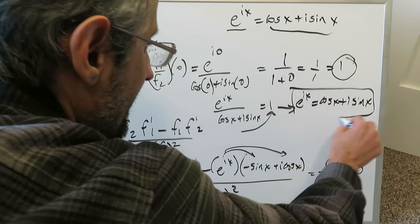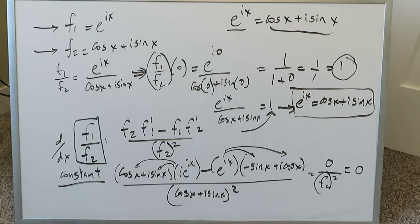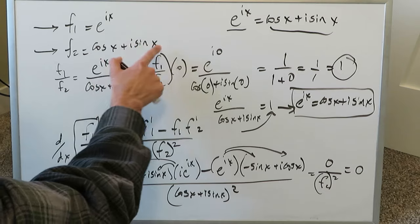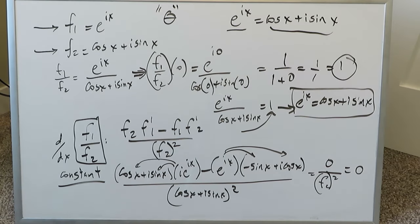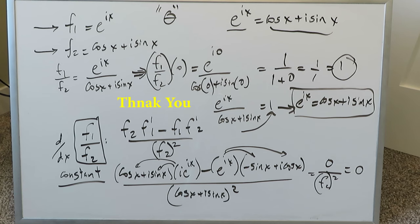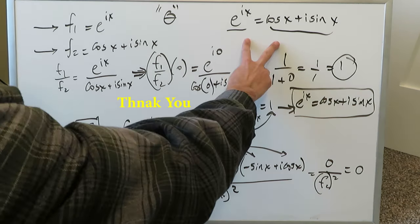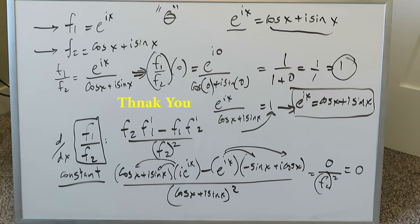Cross-multiplying, we end up with e to the ix is equal to cosine x plus i sine x — and here it is: Euler's formula has been derived. Remember, x could have easily been replaced with theta and the formula would be the same. All of this has been derived using calculus, specifically the derivative procedure, along with a number of assumptions. That is the derivation of Euler's formula completed. There are other ways of doing it, but this was the highlighted way for this video. Thank you for watching, stay tuned, and have a nice day.